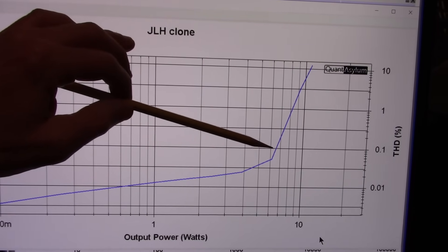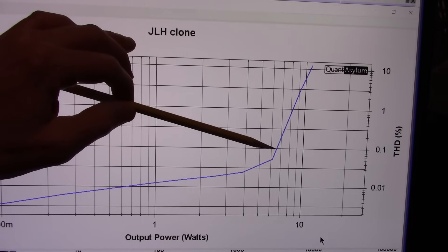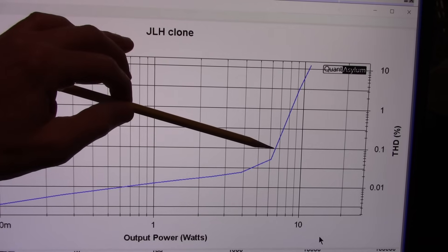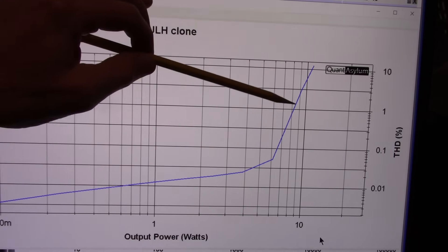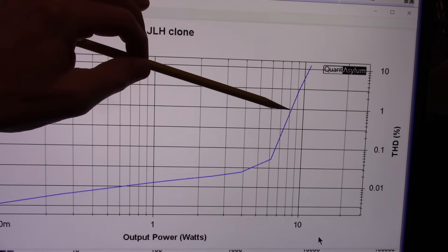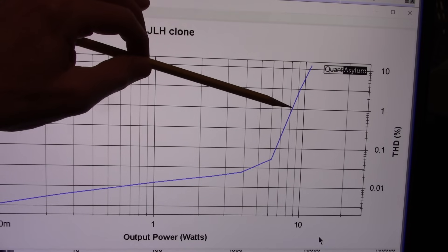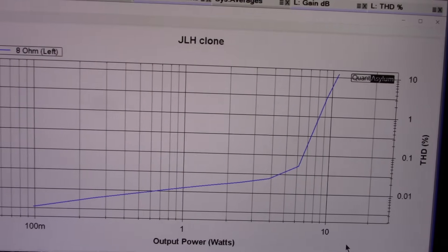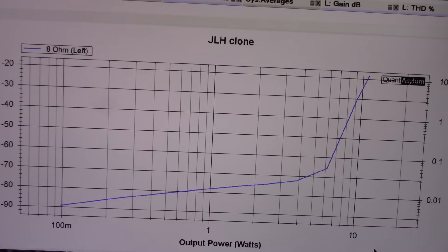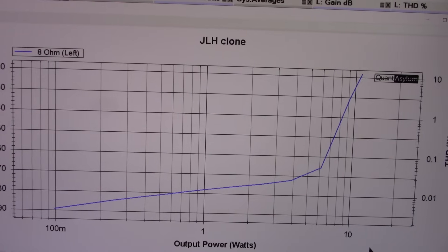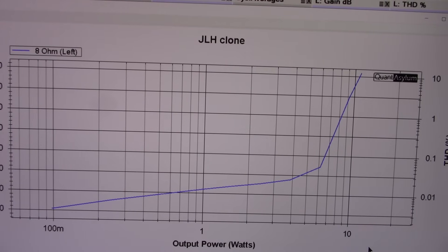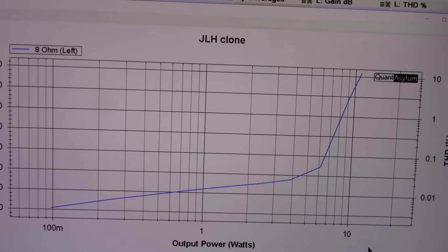And then it starts to knee up into distortion and around 6.3 watts at 0.1 percent and at the one percent line were around 8.1 watts. So no it's not a powerhouse or anything. It's exactly the output I would expect being a single ended amp into eight ohms with a 24 volt supply.